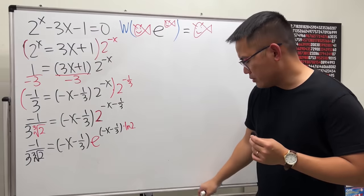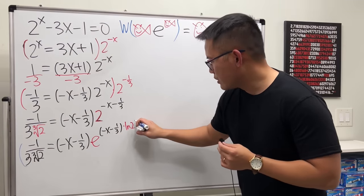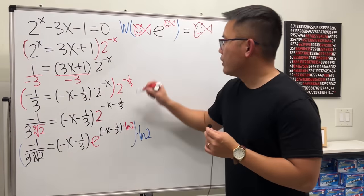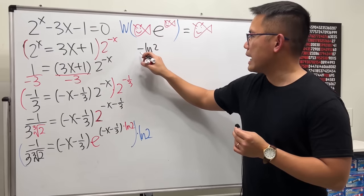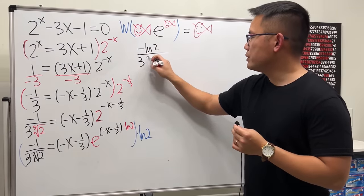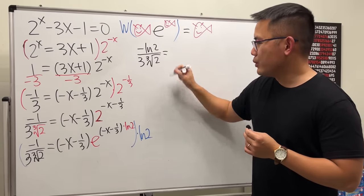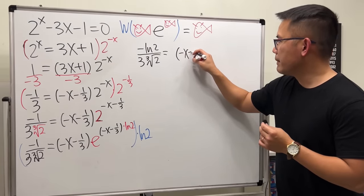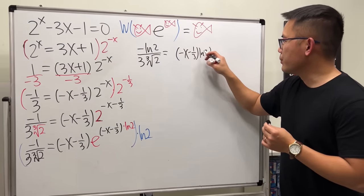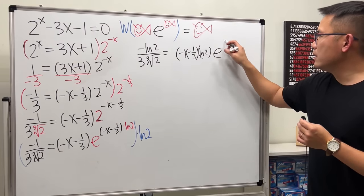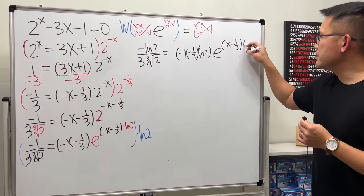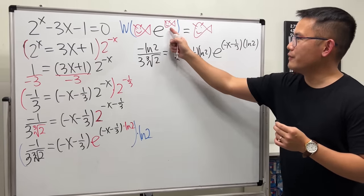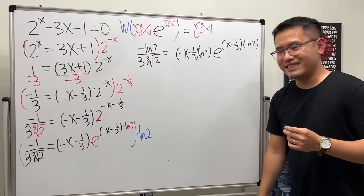Multiply both sides by ln 2. The left side becomes −ln 2 over (3 · cube root of 2), and the right side becomes (−x − 1/3) · ln 2 · e^((−x − 1/3) · ln 2). Now the 'fish' on both sides matches: the coefficient equals the exponent. We have the product log form: fish · e^fish.